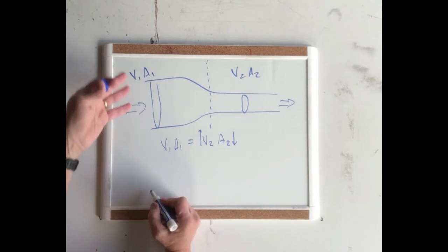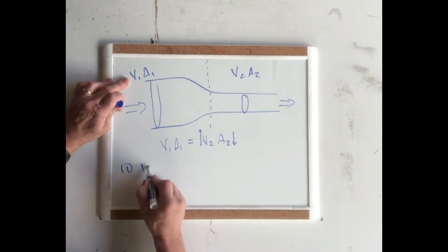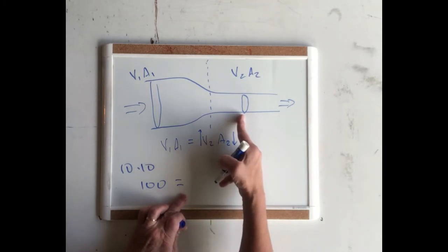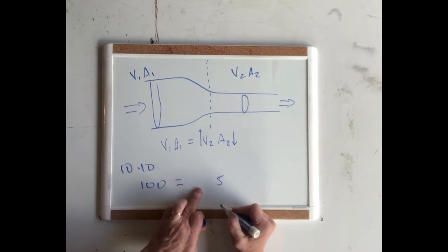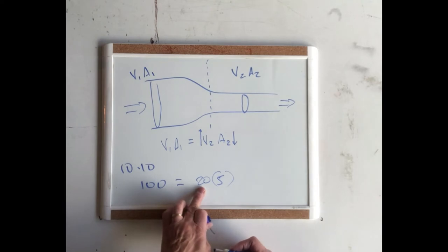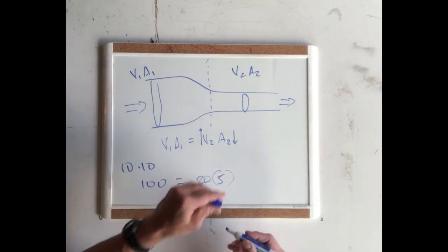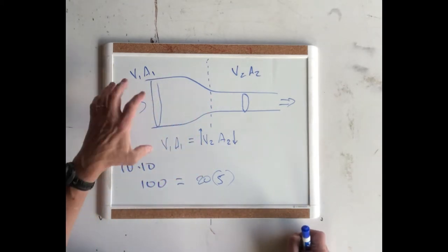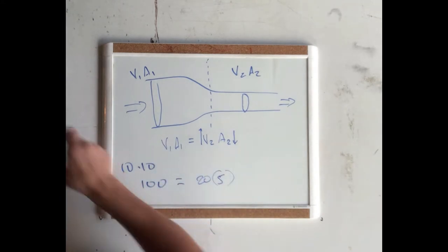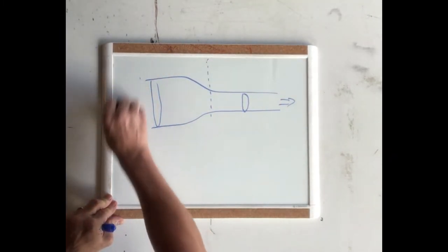Let's do a simple problem — forget units, just raw numbers. Suppose the velocity is 10 and the area is 10, giving us 100 on one side. Now over here, let's cut the area in half to 5. The velocity must go up by a factor of two to 20, keeping both sides equal. So as this fluid goes through a constriction, the cross-sectional area decreases and the velocity must go up. We'll refer back to that in a little bit — it's very important.